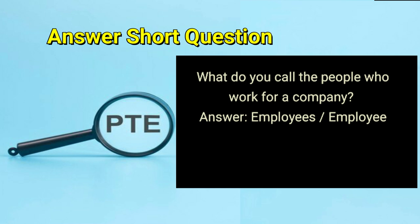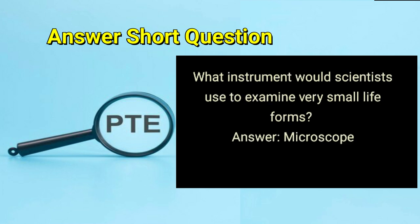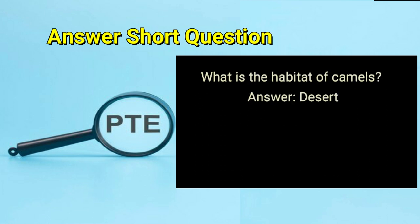What do you call the people who work for a company? Answer: employees. What instrument would scientists use to examine very small life forms? Answer: microscope. What is the habitat of camels? Answer: desert.